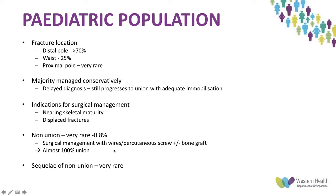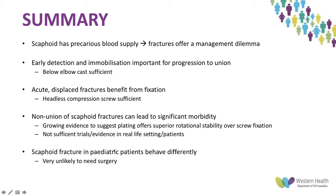In summary: the scaphoid has a precarious blood supply, and fractures offer a management dilemma. Early detection and immobilization are important for progression to union, and a below-elbow cast is sufficient for undisplaced fractures. Acute displaced fractures benefit from fixation, and a headless compression screw is sufficient in the acute setting. In non-union, there is growing evidence that plating offers superior rotational stability over screw fixation, though sufficient trial evidence in real-life settings is lacking. Pediatric scaphoid fractures behave differently and are very unlikely to require surgery.